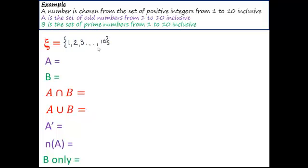Just because I don't want to write out all the numbers from 1 to 10, those three dots tell me that I'm going from 3 all the way to 10, including each of those numbers. In purple here, it says A is the set of odd numbers from 1 to 10 inclusive. So A is all the odd numbers: 1, 3, 5, 7, and 9. And B is the set of prime numbers from 1 to 10 inclusive. So B is 2, 3, 5, and 7.